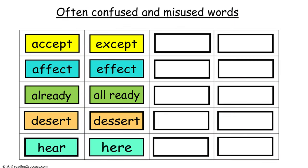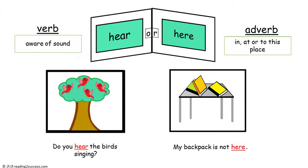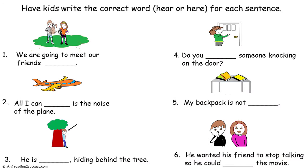Our fifth pair of often confused and misused words are hear and here. Hear, spelled H-E-A-R, is a verb and it means to be aware of sound. For example, 'Do you hear the birds singing?' Our second word, here, spelled H-E-R-E, is an adverb meaning in, at, or to this place — as in 'my backpack is not here.' Have kids write the correct word — hear (H-E-A-R) or here (H-E-R-E) — for each sentence.